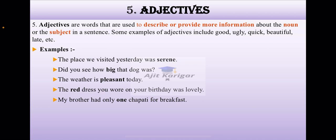Adjectives. Adjectives are words that are used to describe or provide more information about the noun or the subject in a sentence. Some examples of adjectives include good, ugly, quick, beautiful, late, etc. The examples are: